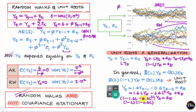This video covered: what a random walk is, what properties make it different from a general stationary AR(1) process, why a random walk is called a special case of the more general unit root processes, and how to detect whether a given y_t specification follows a unit root process or not.